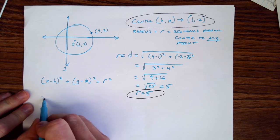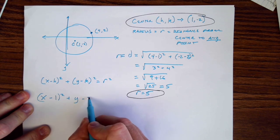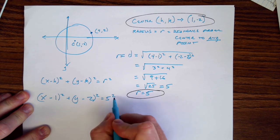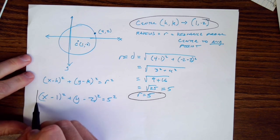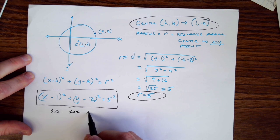In this case it's x minus 1 squared plus y minus negative 2 squared, which you could write as y plus 2, and that's equal to 5 squared. And that is the equation for a circle.